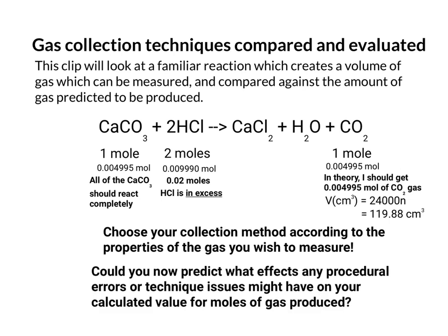So you need to choose your collection method according to the properties of the gas you wish to measure. So what they'll ask you to think about is could you predict what effects any procedural errors, mistakes in other words, or technique issues, one technique being more accurate than another, might have in your calculated value for moles of gas produced. So the calculated value could go up as well as down depending on what actually happens. It's worth maybe having a think about some of this.